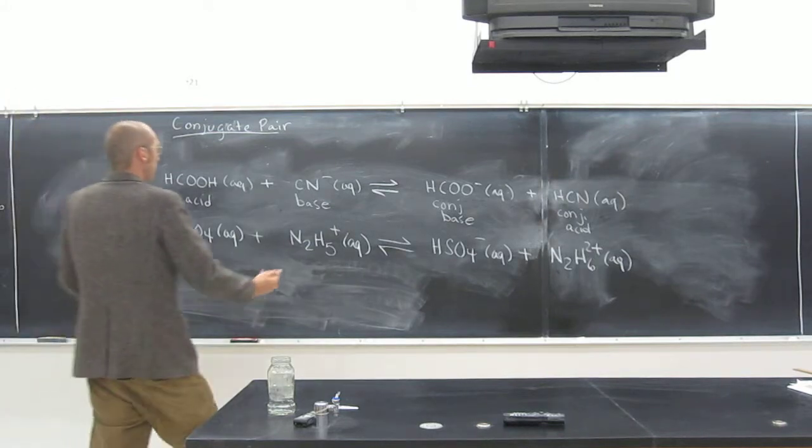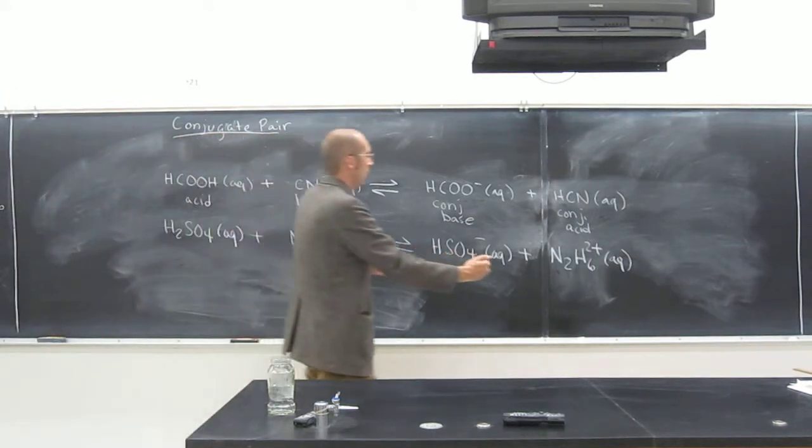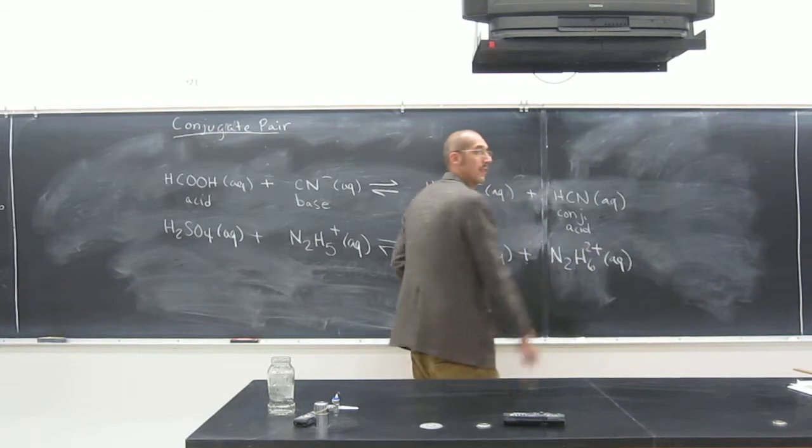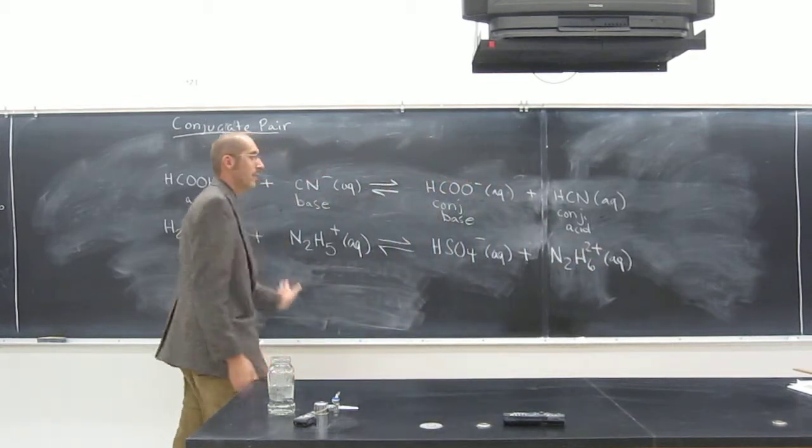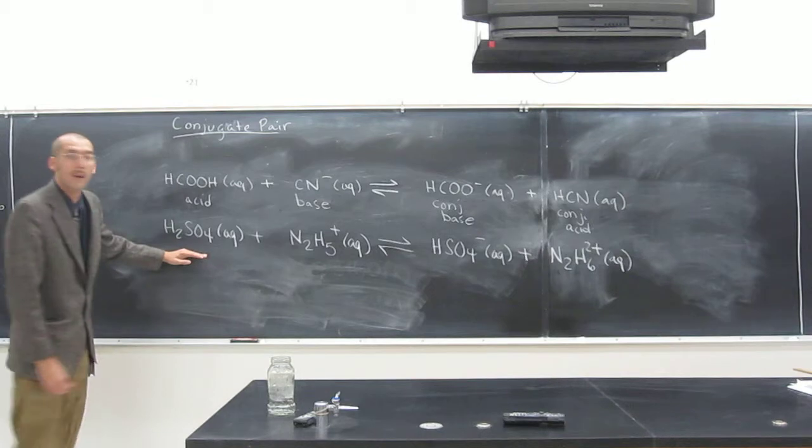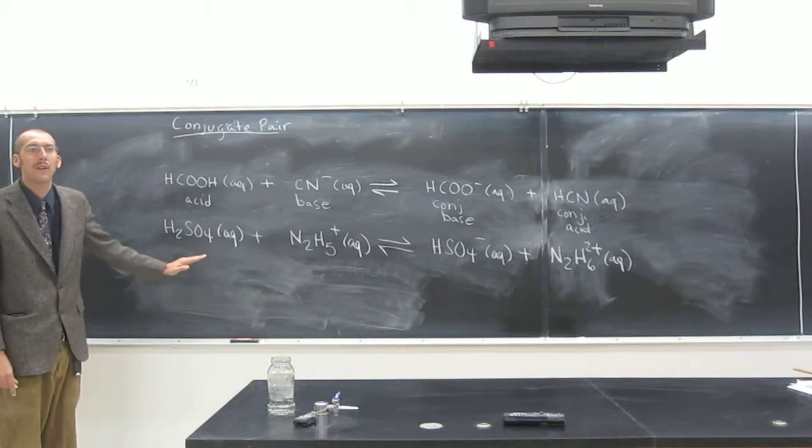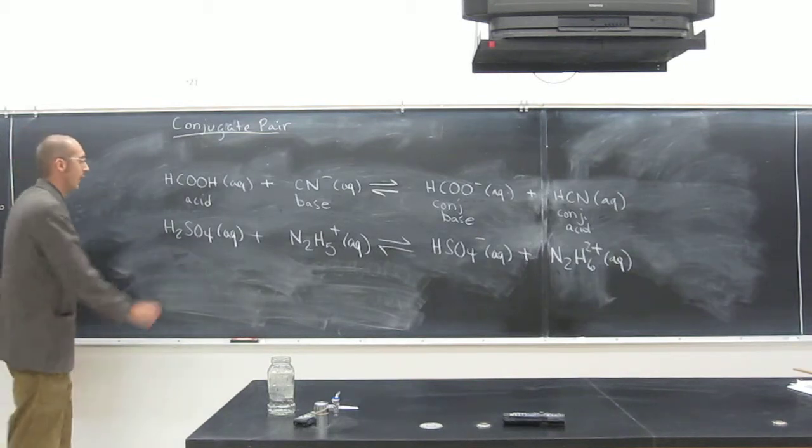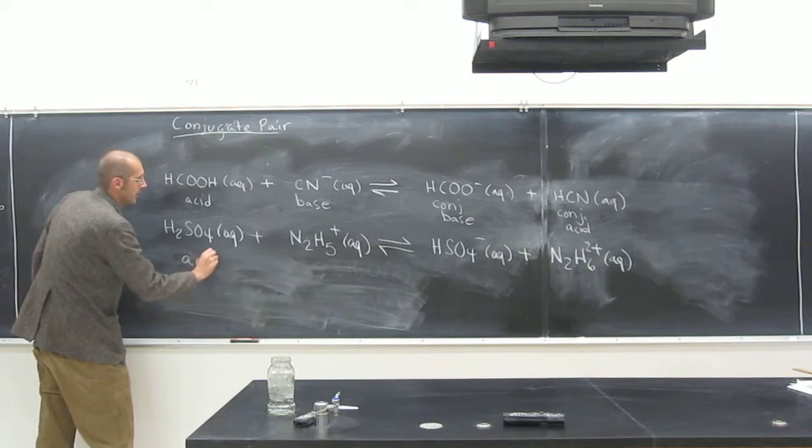Look at what happened to the reaction. Well, this gained positive charge, this lost positive charge, right? So this thing must be the acid. This is sulfuric acid, a very strong acid. This is why it's happening. So this is the acid.